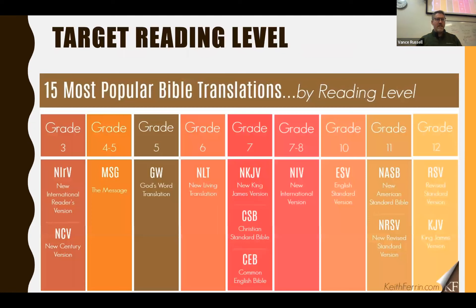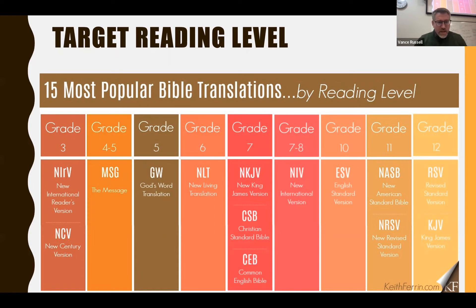Another factor is target reading level. The NIRV is third-grade level. The Message is fourth to fifth grade. God's Word Translation is fifth grade. The NLT is sixth grade. The NKJV, Christian Standard Bible, and Common English Bible are seventh grade. The NIV is seventh to eighth grade. The ESV is tenth grade. The New American Standard is eleventh grade. And the King James and RSV are twelfth-grade reading level. Understanding the reading level makes a big difference.